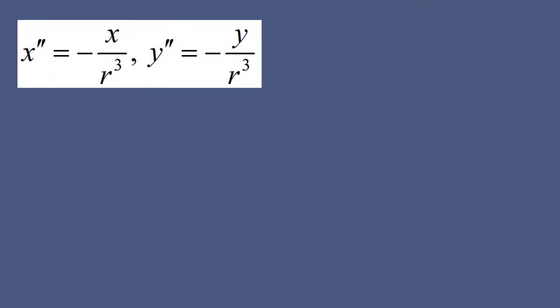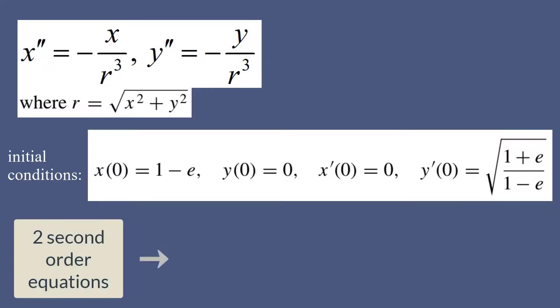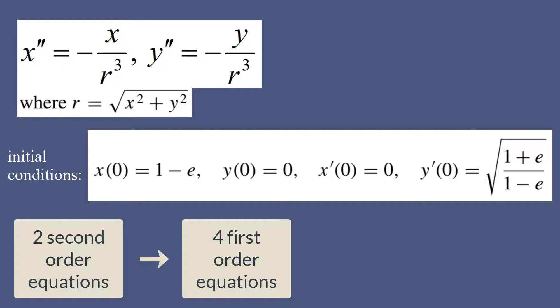Consider Kepler's equation. The equations are like this. Here x and y are functions of t and they represent the coordinates of the moving body. You can also see the initial conditions. Also consider e to be 0.9. Two second-order equations are going to be four first-order equations. What should be the four unknown variables then?